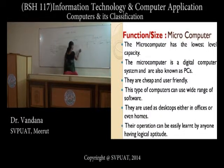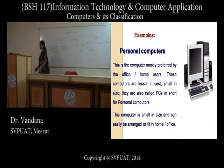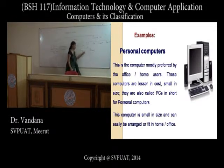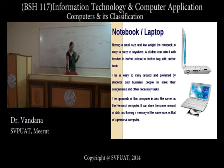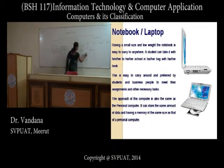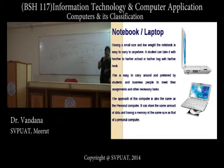Microcomputers can be further classified into desktop computers and portable computers. A desktop computer is placed on top of a desk and is non-portable. Portable computers can be used while on the move as they run on charged batteries. These include laptops and notebook computers, which are smaller than laptops with somewhat limited functionality.